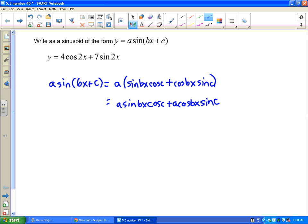And then let's look at what we have to start off with on our problem: we have 4 cosine 2x plus 7 sine 2x. Well, let's look at what I have here - I have sine of bx.